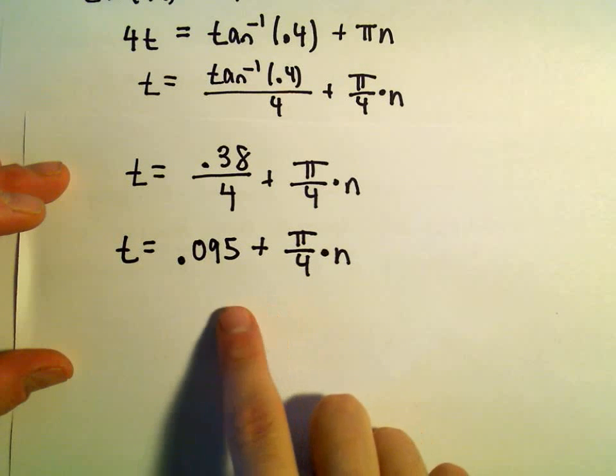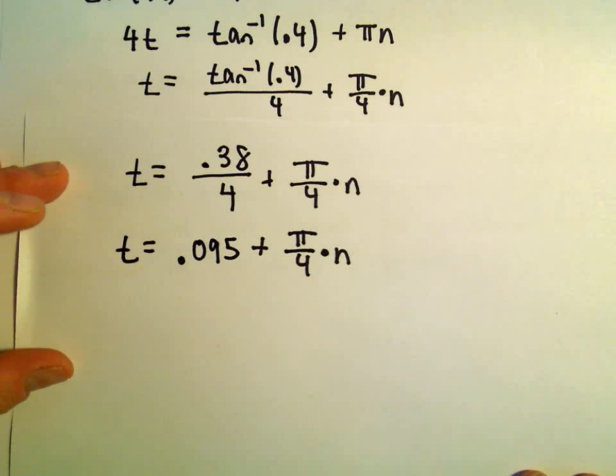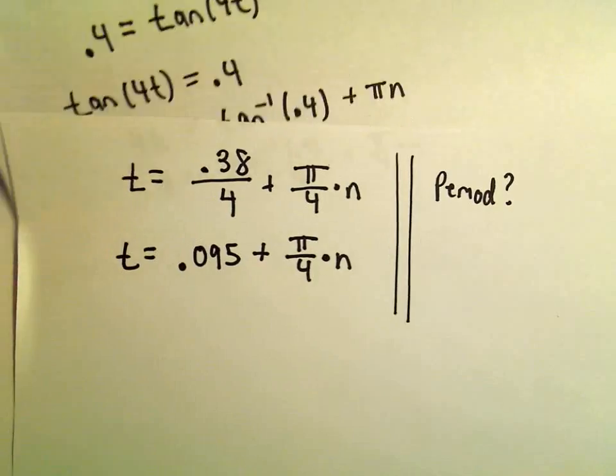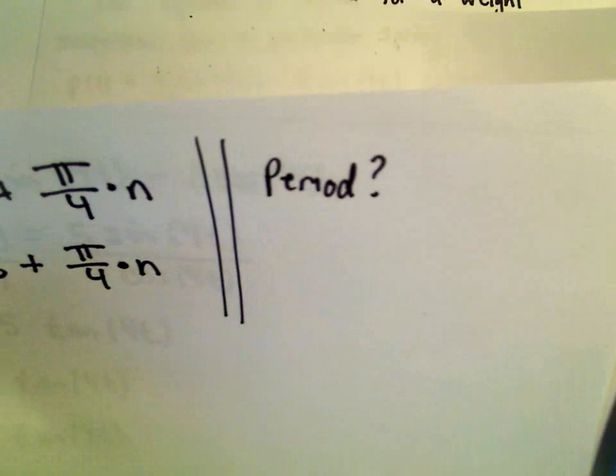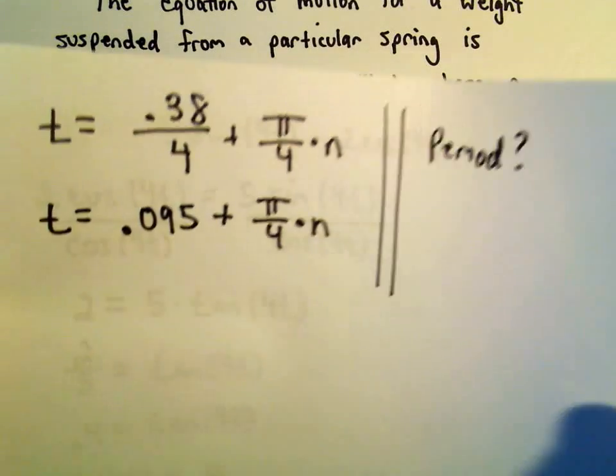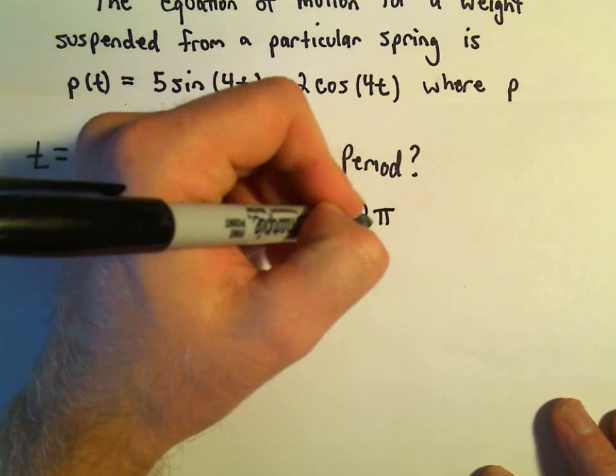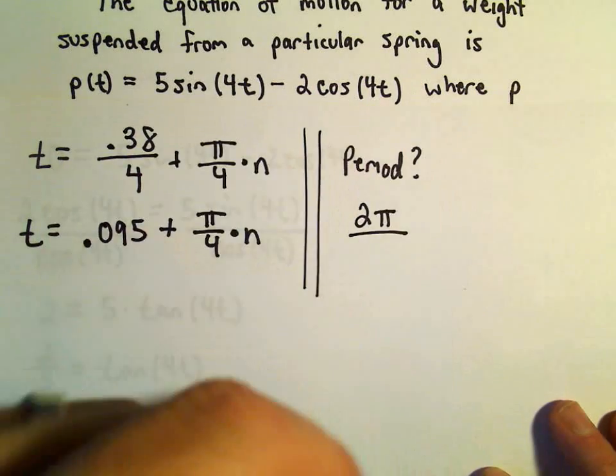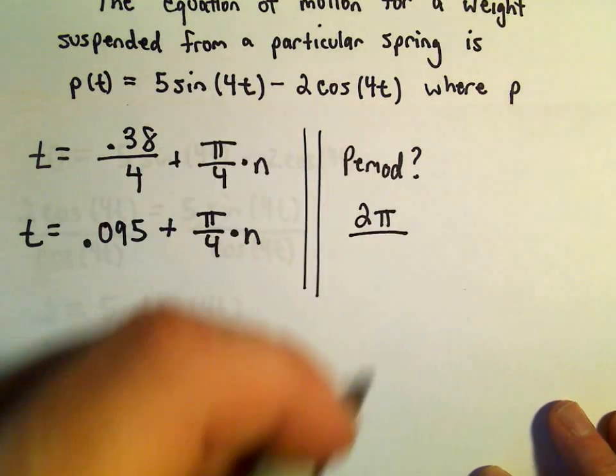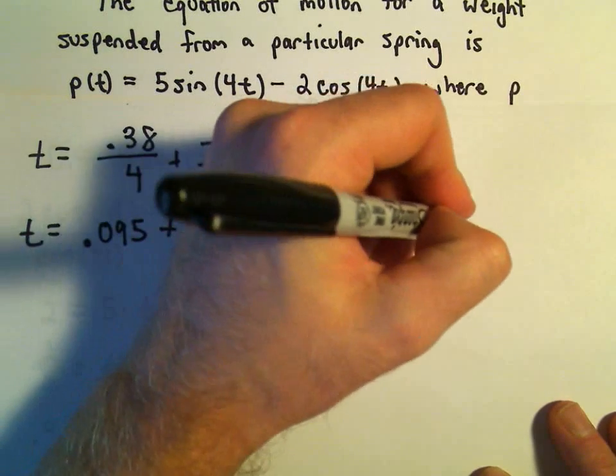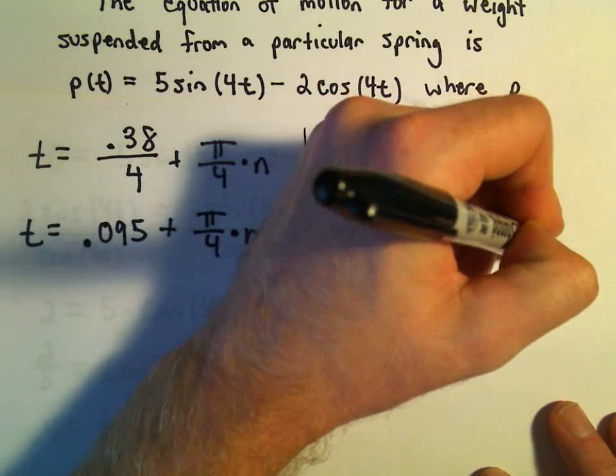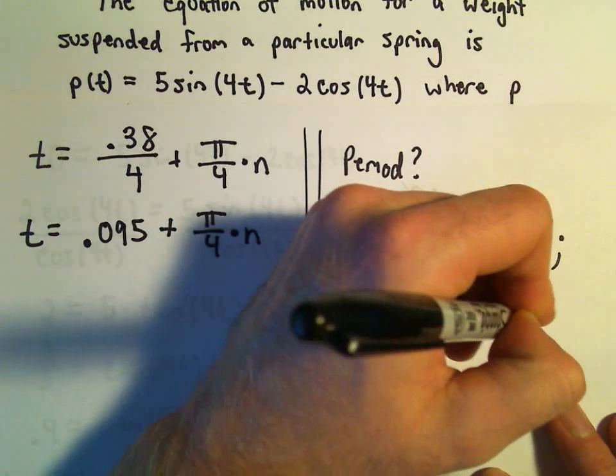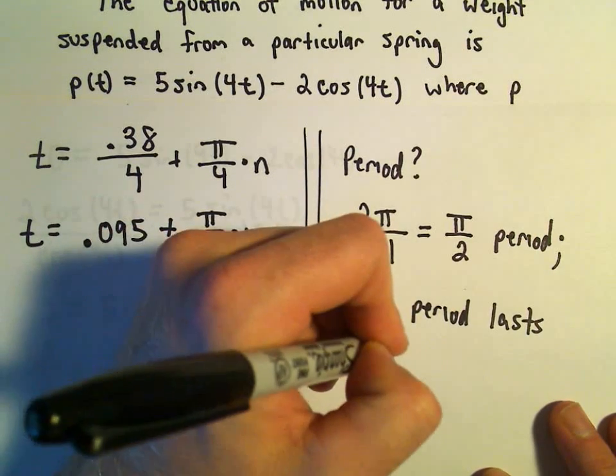Now we have to start thinking about solutions that actually work. One thing we have to think about as well is the period. Recall our original equation: we had 5 sine of 4t minus 2 cosine of 4t. Remember the period, we take 2 pi and we divide it. When the coefficients are the same, to find the period we simply take 2 pi and divide it by the coefficient on our variables. So 2 pi over 4 or pi over 2 will be the period.